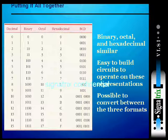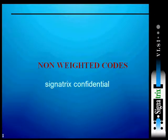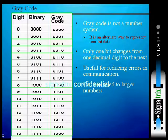Let us have a look at what exactly are non-weighted codes. Gray code is one type of non-weighted code. It has digits from 0 to 15 with corresponding binary values and gray code values. Gray code is not a number system - it is an alternate way to represent 4-bit data. Only one bit changes from one decimal digit to the next, which is useful for reducing errors in communication.